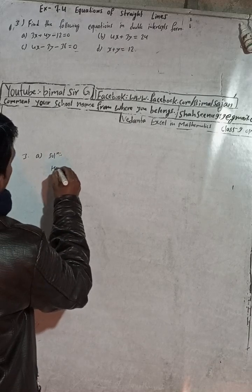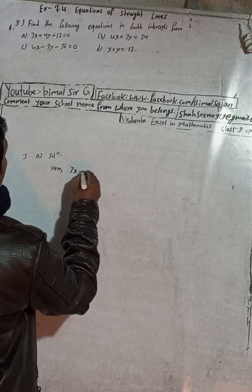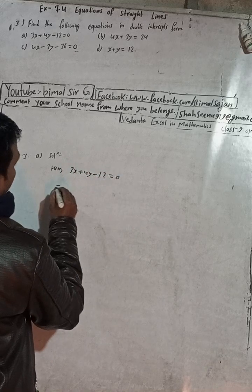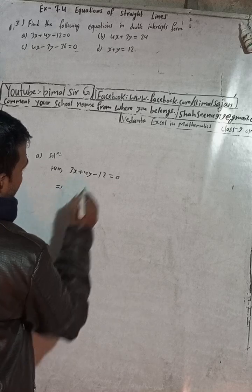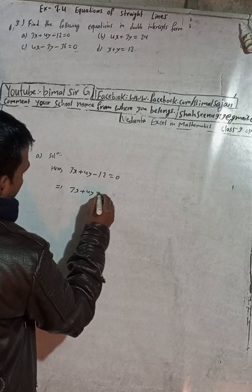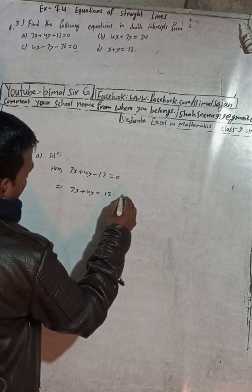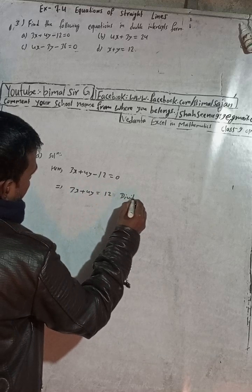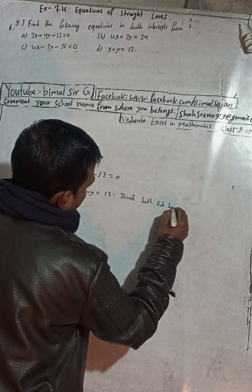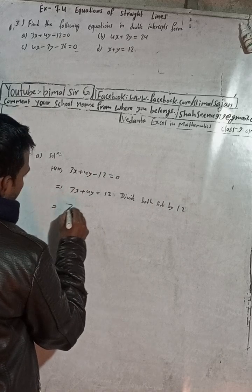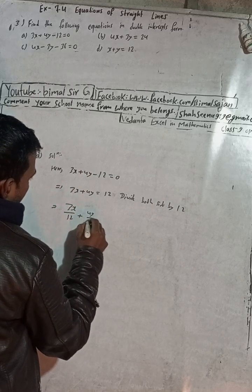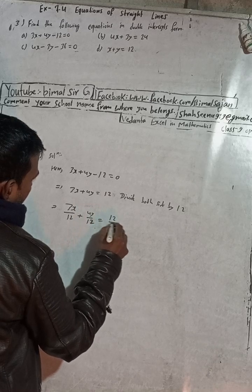Here: 3x plus 4y minus 12 is equal to 0. For the double intercept form, you have to take the constant to the right side. So 3x plus 4y equals 12. Now divide both sides by 12.